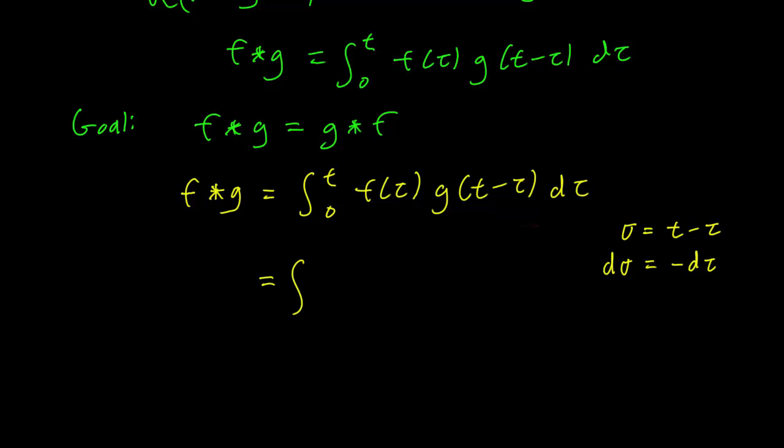So if we make the change of variables, since sigma is t minus tau, tau is sigma minus t, so we have f... sorry, tau is t minus sigma, it's a mistake, tau is t minus sigma.